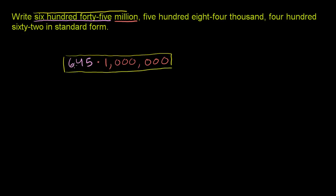And what is that when we write it out? If we were to multiply this out, this is equal to 645 times this 1 with 6 zeros behind it. So this would be equal to 600. I'll write it like this. This is equal to 645.